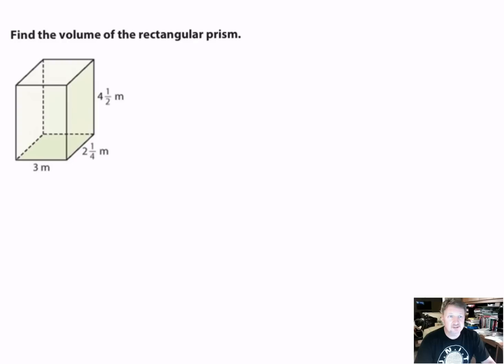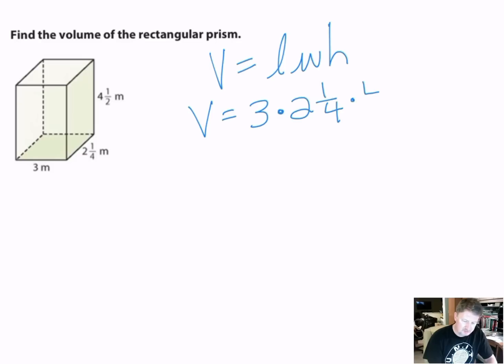So, let's look at our first example. It says, find the volume of the rectangular prism. Here, we have a picture of a prism. The width is 3 meters. The length is 2 and a quarter meters. And then, the height is 4 and a half meters. So, my formula is V equals length times width times height. So, I just plug in my numbers. I keep the V and I say 3 times 2 and 1 quarter times 4 and 1 half. And now, it's a simple matter of multiplying.